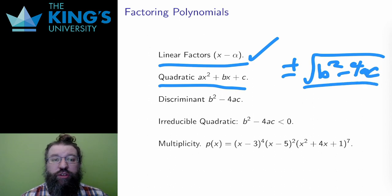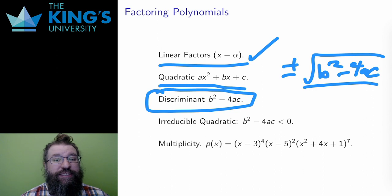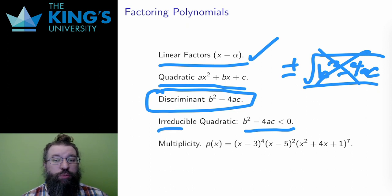This is called the discriminant of the quadratic. Since it is inside the square root, it determines whether or not roots exist. If the discriminant is negative, then there is a negative under the square root, which means that the quadratic cannot be solved. There are no roots. So there are no linear factors. This is called an irreducible quadratic.